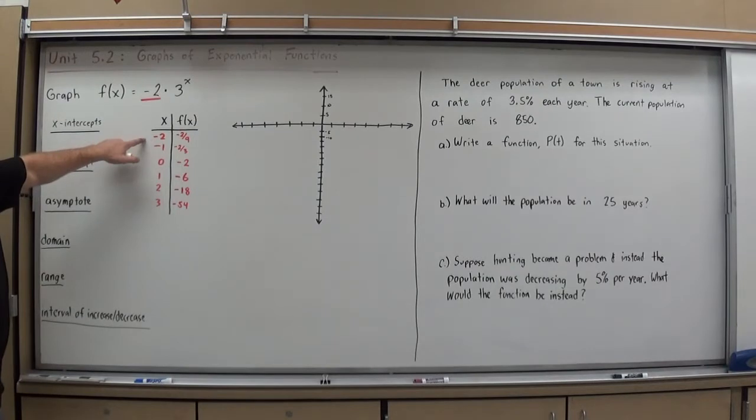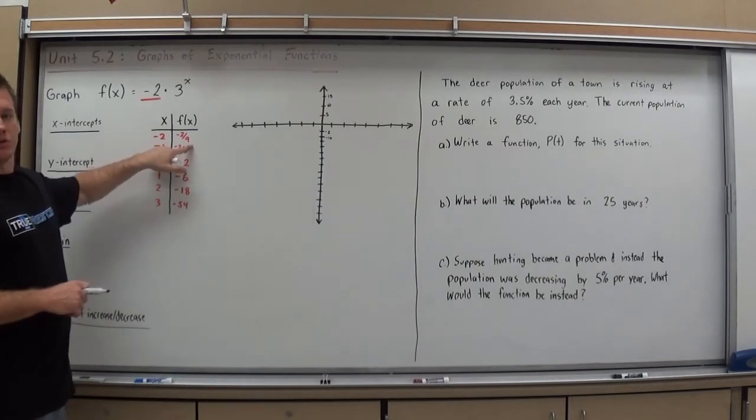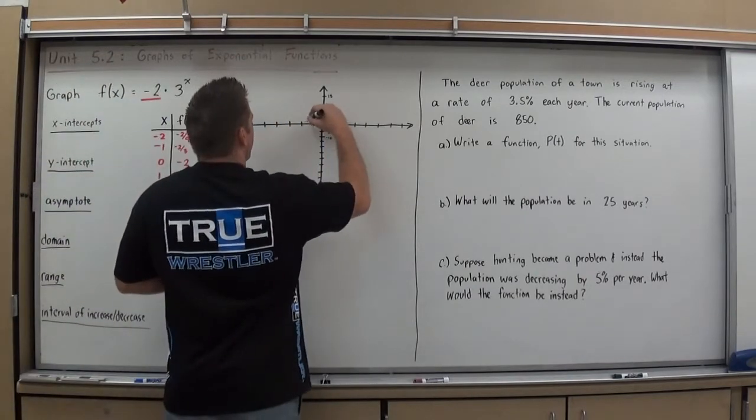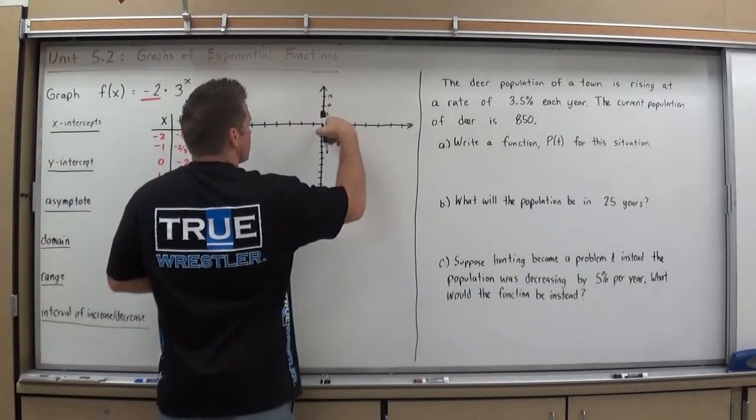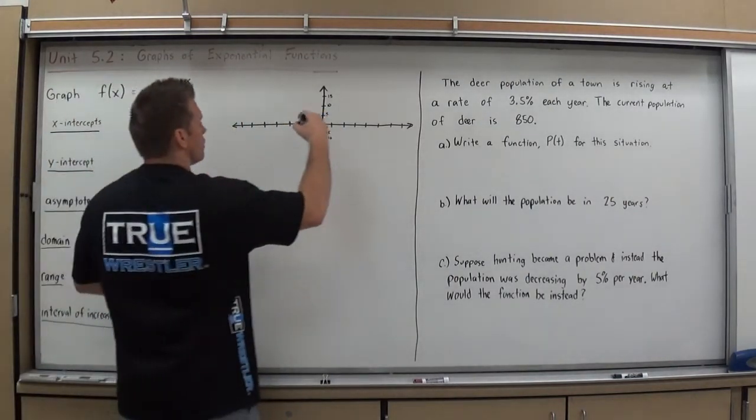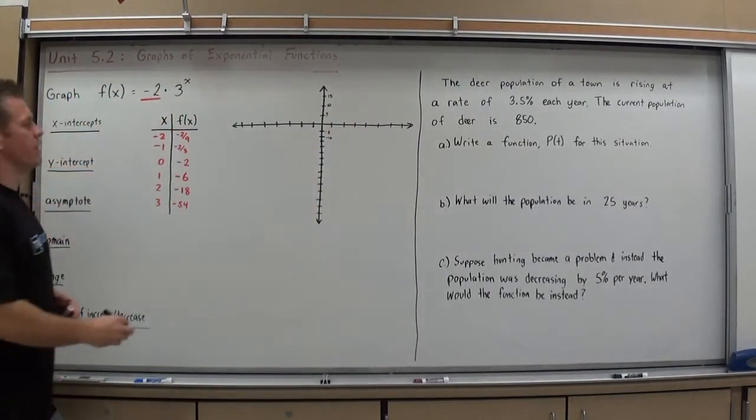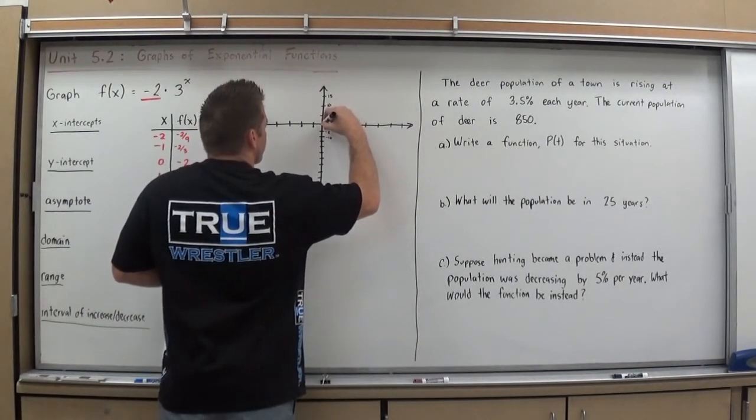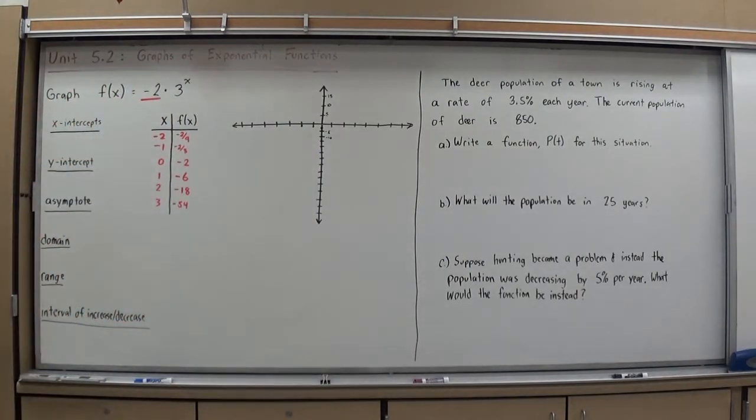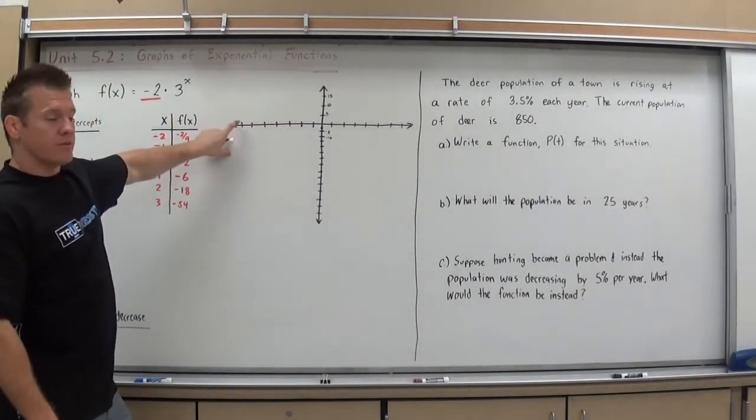And I'm going to plot my points. So, I have a negative 2 and a negative 2 ninths. If you have trouble graphing fractions, you can use the calculator to turn it into a decimal, or long division even. Negative 2 divided by 9. But I know that that's barely, especially when my scale is going by 5, that's almost touching the x-axis. Negative 1 is negative 2 thirds. Again, very small, barely coming off my x-axis. 0, negative 2. Negative 2 is my first full coordinate point. So, it's lower than the other ones, but still not much more than halfway down. If we continue moving this table up to negative 3, negative 4, all it does is get closer and closer to that x-axis. And we've already seen that before.